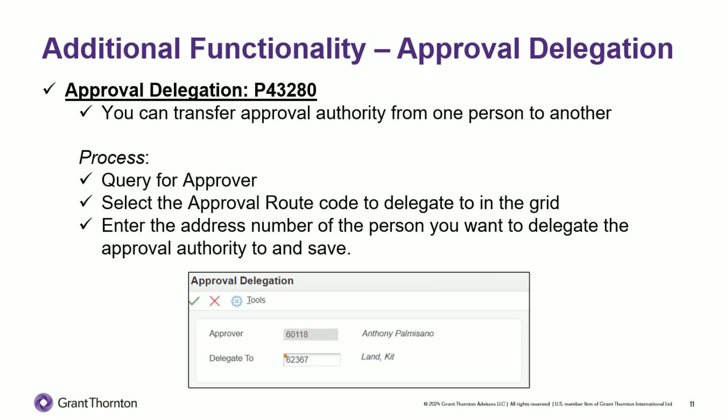There is additional functionality for approval delegation. If an approver is out of office, for example, you can transfer approval authority from one person to another. That process includes querying for the approver, selecting the approval route code to delegate to, and entering the address number of the person you want the approval authority delegated to. Now that we've finished the setup, we'll move into a quick demo.